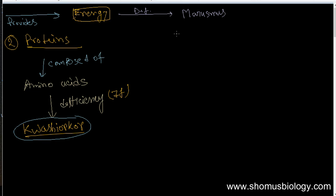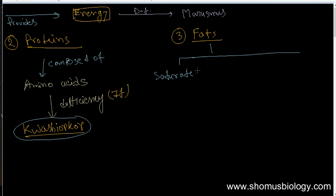The third macronutrient is fat. Fat produces the maximum amount of energy. Fat can be composed of different types: one is saturated fat, also known as trans fat. Trans fatty acids are chemically classified as monounsaturated fatty acids (MUFA). If the configuration is cis, then it falls under the saturated formula; otherwise it is monounsaturated.